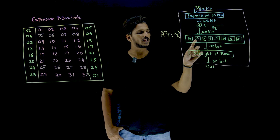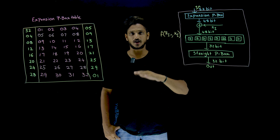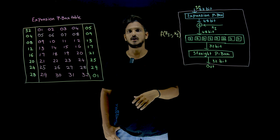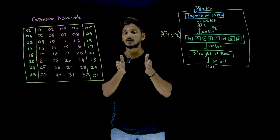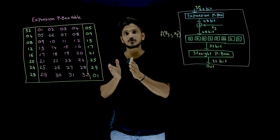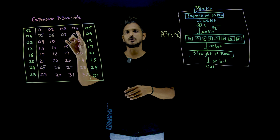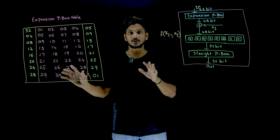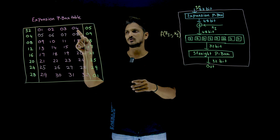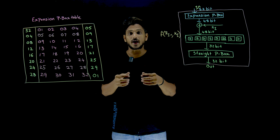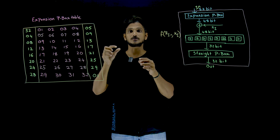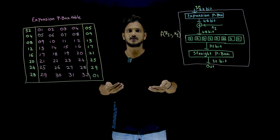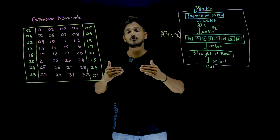Now, let's understand what happens inside the expansion P-box. We have 32 bits, and these 32 bits are divided into 8 parts of 4 bits each — bits 1, 2, 3, 4 in the first group, then 5, 6, 7, 8, then 9, 10, 11, 12, and so on up to 32. Each division has 4 bits. In order to expand these 4 bits to 6 bits, the first 4 bits are expanded to 6 bits, the next 4 are expanded to 6 bits, giving us 8×6 = 48 bits. So 32 bits are converted to 48 bits.